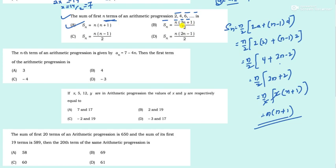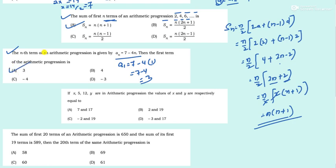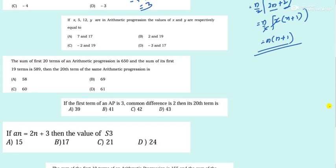Don't confuse this with 2n+1 — we got 2n+2. Next question: The nth term of an AP is given; find the first term. The first term is a1, so just put n = 1: 7 − 4 = 3. Option A.